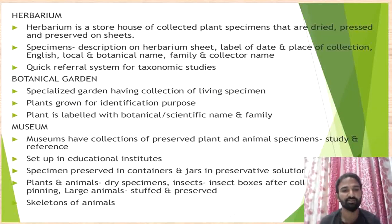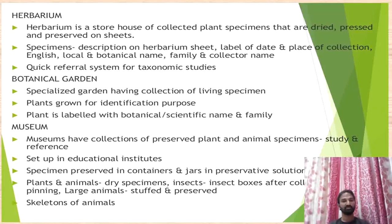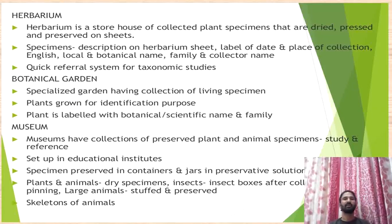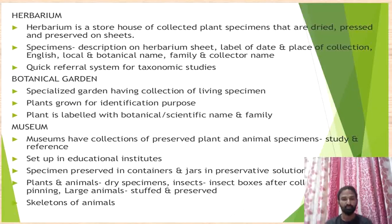Coming to museums — museums also have collections of preserved plants and animals in the form of specimens, used for reference to identify plants. These are educational institutions where specimens are preserved in containers or jars in preservative solution — 70% formaldehyde. Whatever specimens are collected are placed in that formaldehyde and preserved. Plants, animals, dry specimens of insects in insect boxes, and skeletons of animals are also preserved in large containers in medical institutions and colleges for referral study. Museums are also used as taxonomical aids.